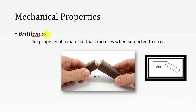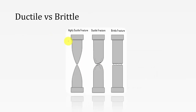Brittleness is the property of the material that fractures when subject to stress — it will not allow any deformation. Just remember glass or a biscuit: you cannot bend them; they undergo failure directly. Ductility means the material undergoes deformation without failure, while brittleness means it will not undergo any deformation. This is the difference between ductility and brittleness.